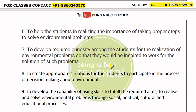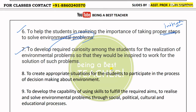We will cover a total of 10 objectives and I'll show you more — you can pick whichever seem easy to you. There are many aims, essentially unlimited. Next is to help the students in realizing the importance of taking proper steps to solve environmental problems — that students take proper initiatives for all environmental problems.